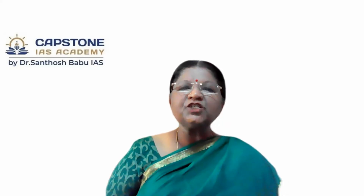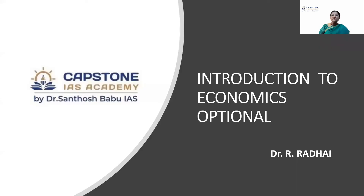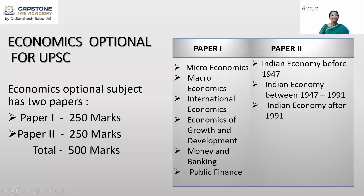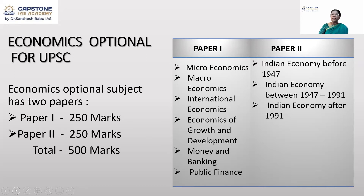Now I will explain the syllabus for the UPSC economics optional. The subject has two papers — Paper 1 consisting of 250 marks and Paper 2 consisting of 250 marks, bringing the total to 500 marks. Paper 1 covers the following branches of economics: microeconomics, macroeconomics, international economics, economics of growth and development, money and banking, and public finance.